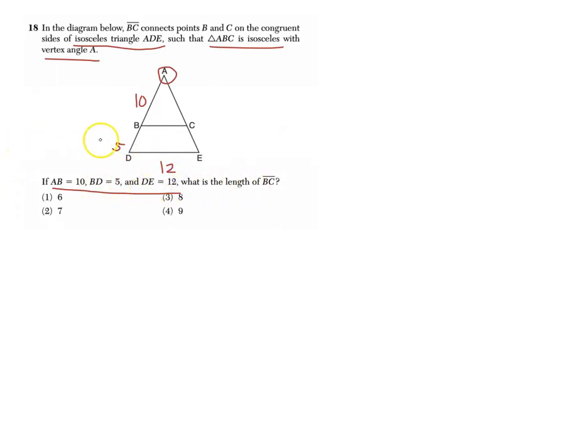With these kinds of problems, what you need to do is recognize that you have two triangles: triangle ABC and triangle ADE. If they're similar, they have the same proportion, so the ratio of their side lengths are the same. So what you can do here is, let's find AD. What is AD? Well, 10 plus 5 is 15.